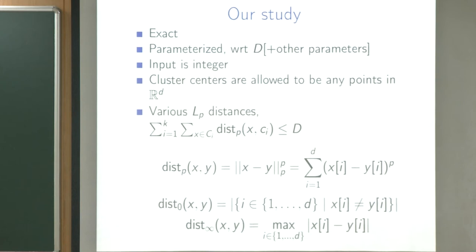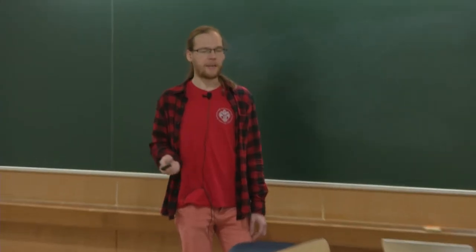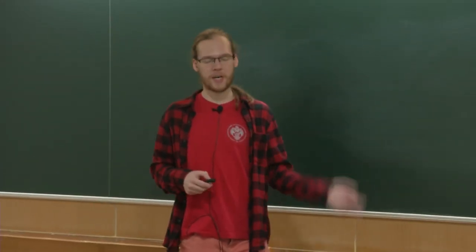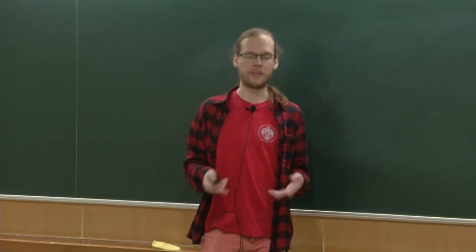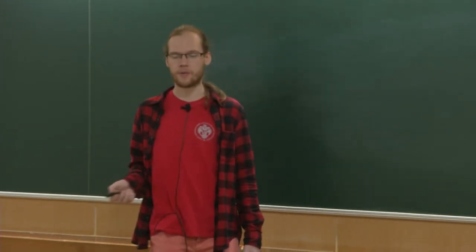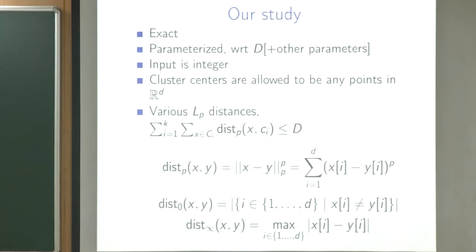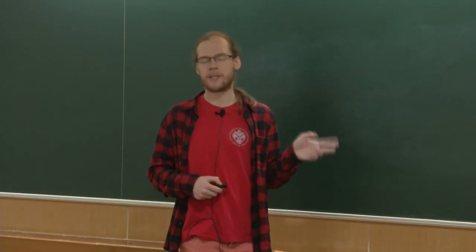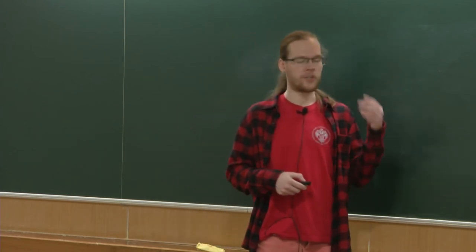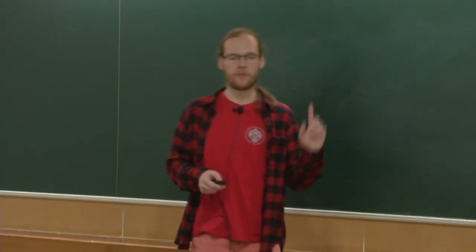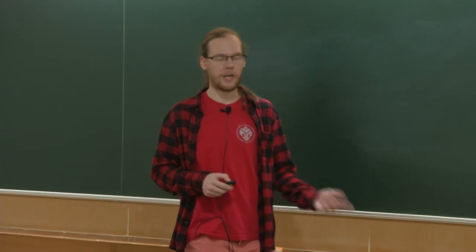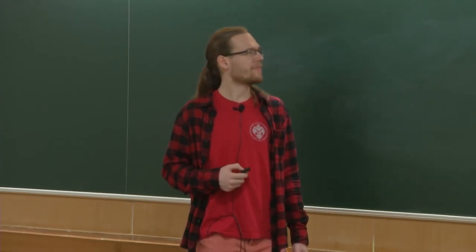Regarding why inputs are integers: when we bound capital D, it must have some kind of scale. If the input has arbitrary points, it doesn't really matter that D is small, because points can lie in a sphere of radius a thousand or more. But when points are integers, it gives a scale — when capital D is small, then the points are really not far from each other, or a lot of them are the same.